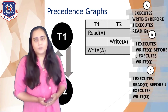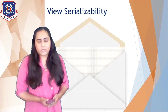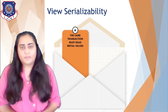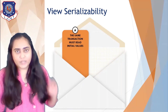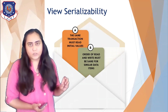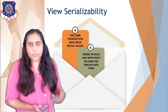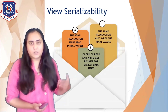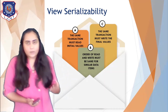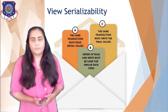Now let's move to the next type of serializability: view serializability. There are three rules. Rule 1: the first read operations must be done by the same transaction in the schedule. Rule 2: the order of read and write operations should not change for the same data item. Rule 3: the final write operation done to any data item must be done by the same transaction.